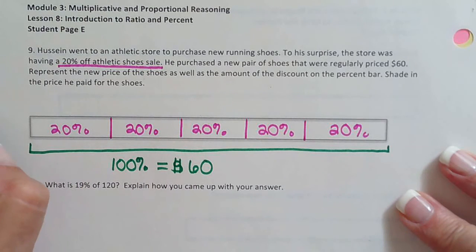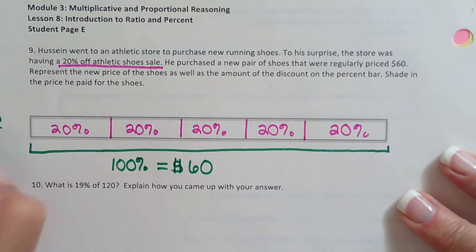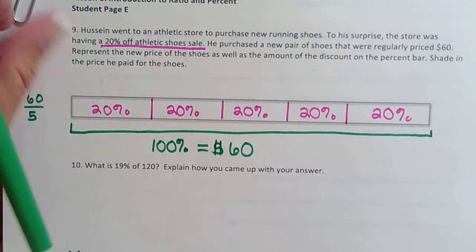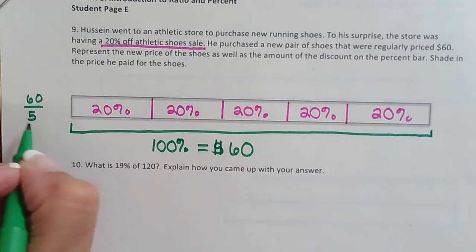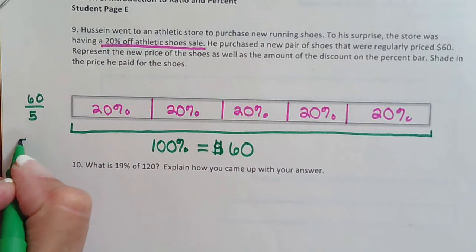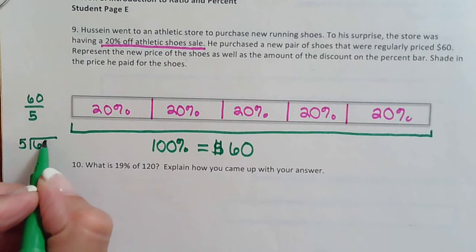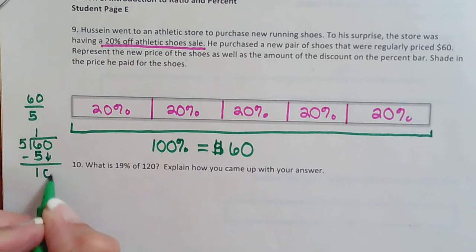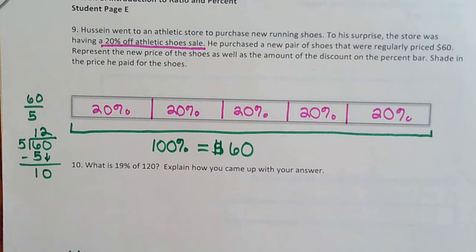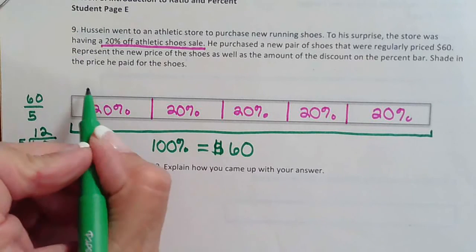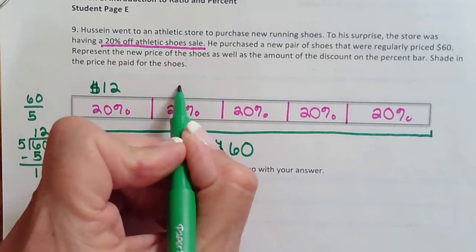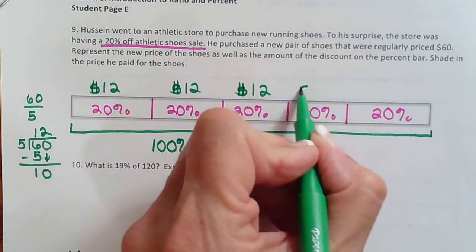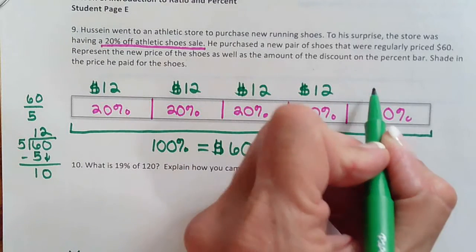Whoops. Off the paper, Norris. It's got to keep me in line here. So 5 into 60 would be 1, 5. Subtract. Bring down your 0. Goes in twice. So that means each box is $12, $12, $12, $12, $12.